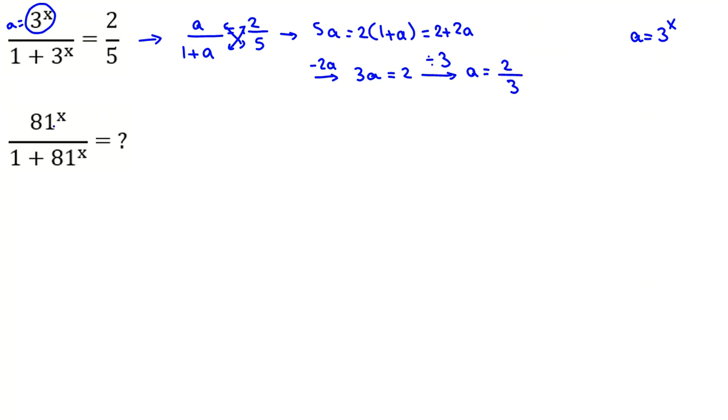Now, here is 81 to the x. 81 to the x equals 3 to the 4 to the x, equals 3 to the 4x. We apply power rule here. We can also say it is equal to 3 to the x to the 4.